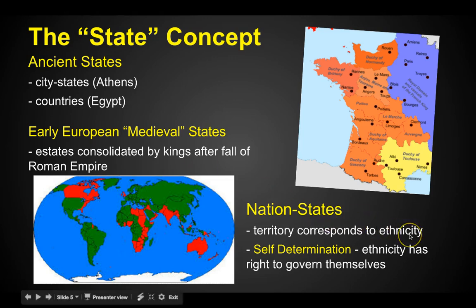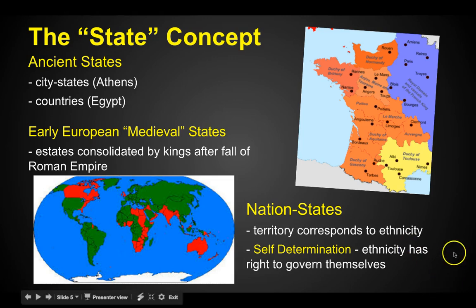Then the nation-state, where you have a territory that corresponds to an ethnicity. Think about Denmark — for the most part, people there are Danes and they all live in Denmark, making it a very homogeneous area. That's different from the United States, which has so many different ethnicities that we can't call it a nation-state. The most important principle within the state concept is self-determination — within a nation-state, an ethnicity claims the right to govern itself.